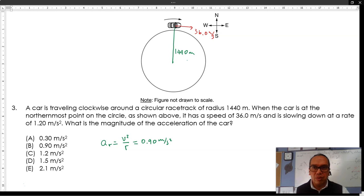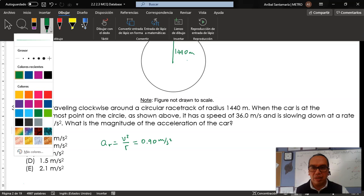On the other hand, they tell you that you have a tangential acceleration because the object is slowing down.